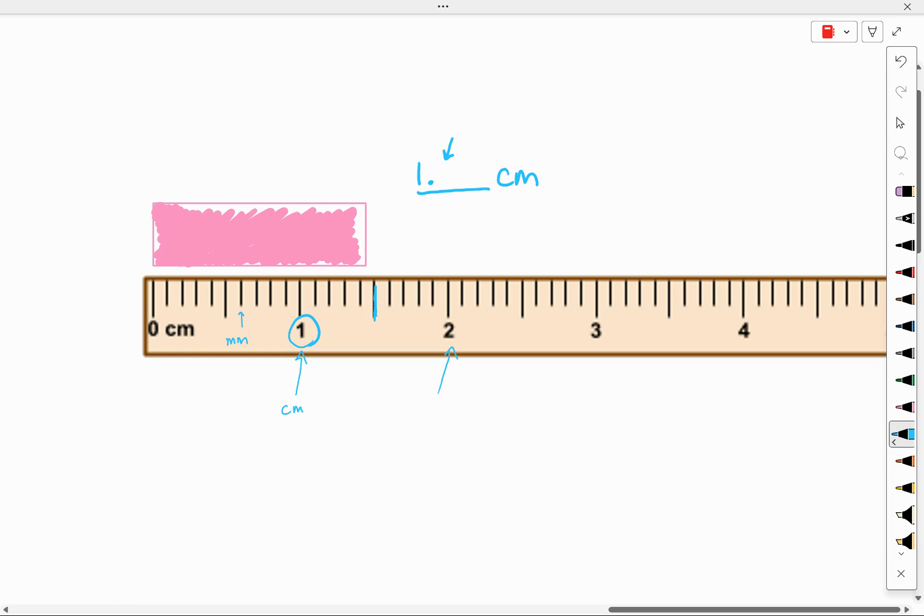And this object is more than 1.1 or 1 and 1 tenth. More than 1 and 2 tenths. More than 1 and 3 and more than 1 and 4. But not quite 1 with 5 tenths. I'm going to call it 1.4 tenths of a centimeter.